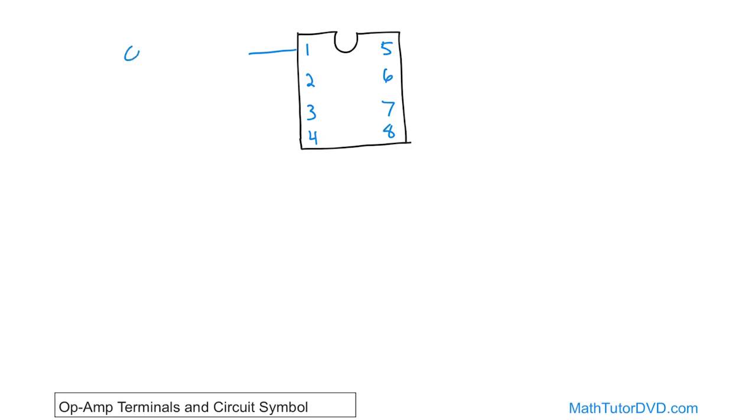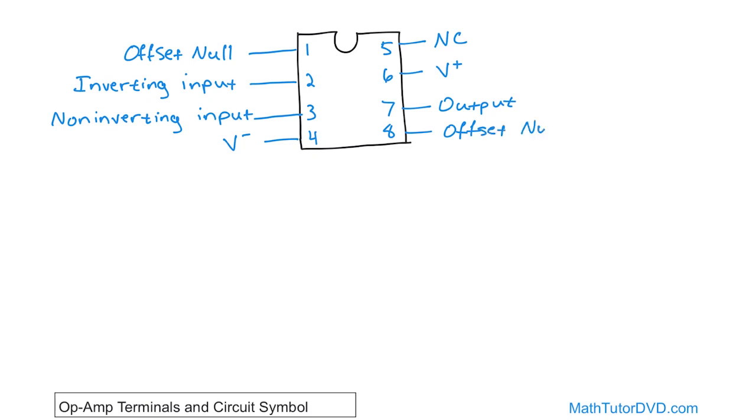We're not going to get into excruciating detail on this, but we are going to introduce them. So the first guy here is called offset null. The second guy is extremely important. One of the ones you'll be using all the time. It's called the inverting input. And this guy, number three, is again extremely important. It's called the non-inverting input. Number four is something called the minus. Number five is something called NC. Number six is called the plus. Number seven is the output. This is essentially going to be the output of the amplifier. And then number eight is going to be, again, offset null.